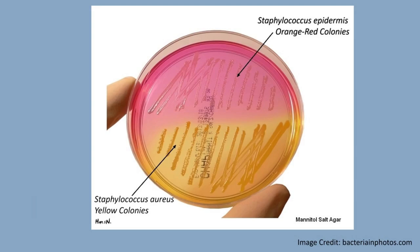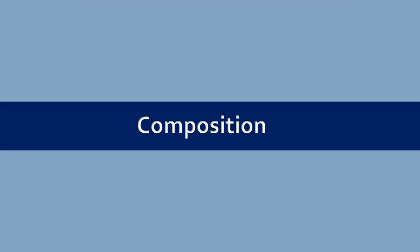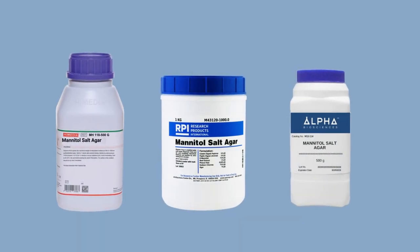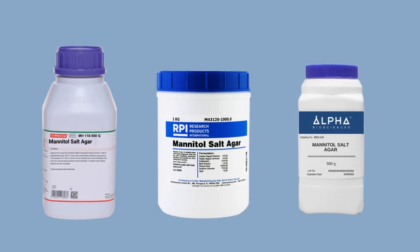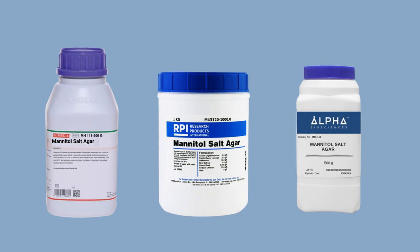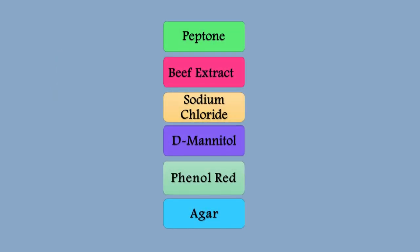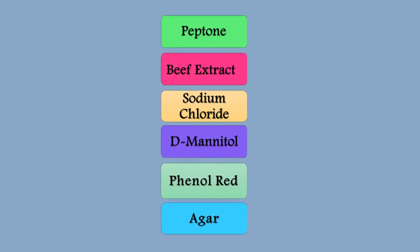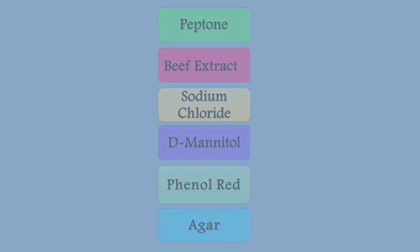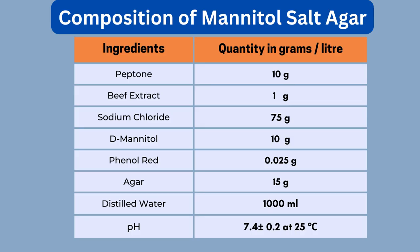If the medium turns yellow, it means that the bacteria are producing acid, and if it remains red, it means that there is no acid production. Now let's discuss what is the composition of mannitol salt agar. If you don't have the commercially available mannitol salt agar media, then you can make mannitol salt agar medium by adding individual components: peptone, beef extract, sodium chloride, mannitol, phenol red, and agar. This is the standard formula for making 1 liter of mannitol salt agar medium. You have to weigh all these ingredients, dissolve them in 1000 ml distilled water, and then adjust the pH at 7.4 ± 0.2 at 25 degrees Celsius.